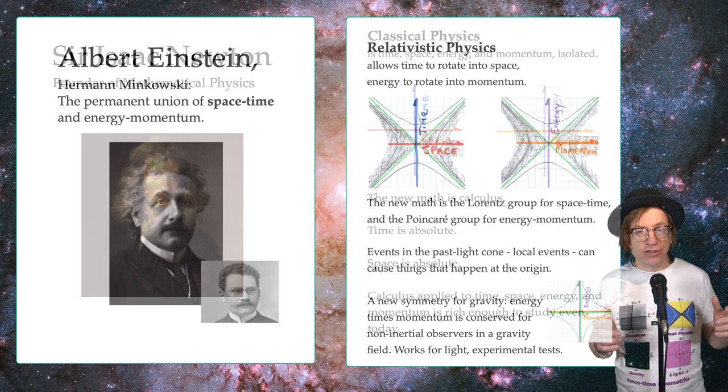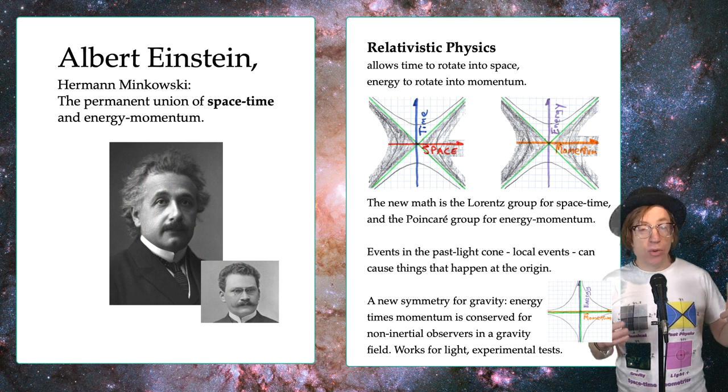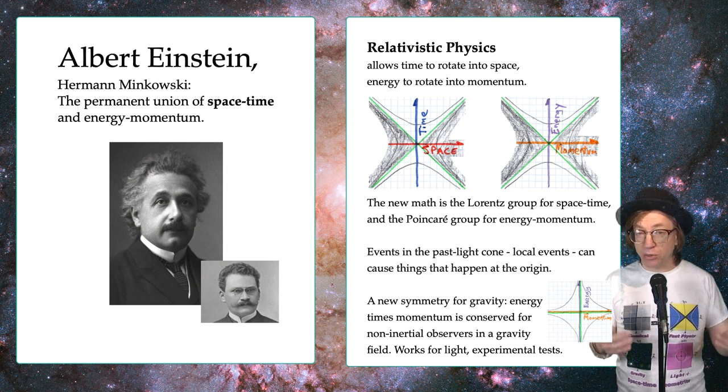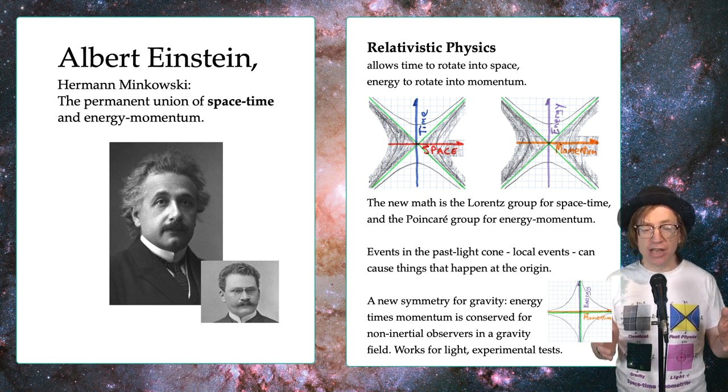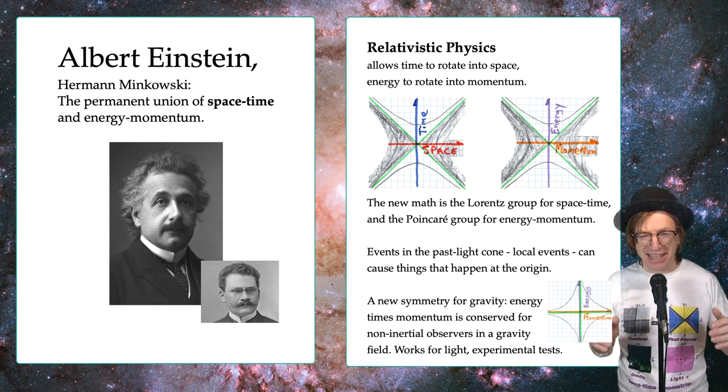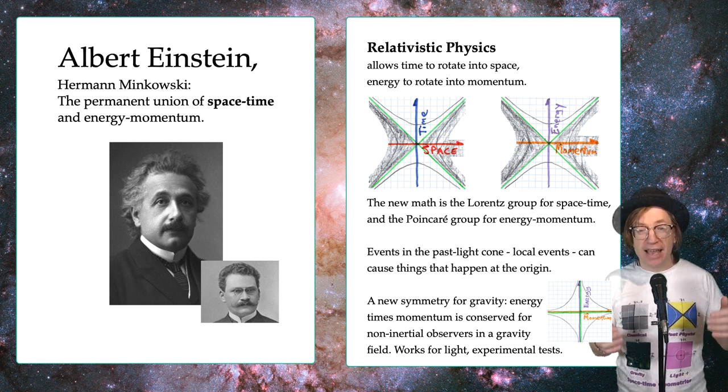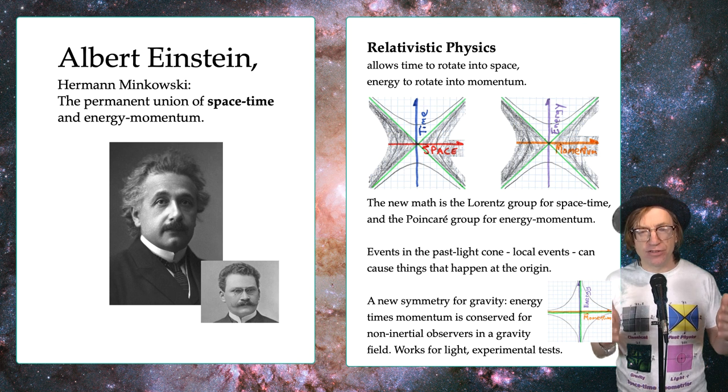Now Einstein figured out that time and space do have a relationship, that was special relativity, and his math teacher figured out that's just a rotation of a four-dimensional vector space, which kind of went beyond Einstein until he saw the diagram, and that of course made everything so much clearer.